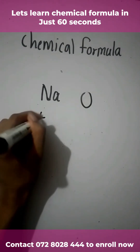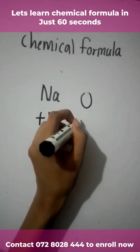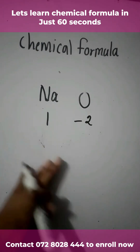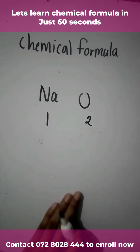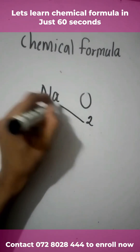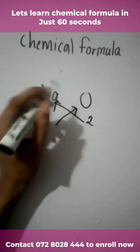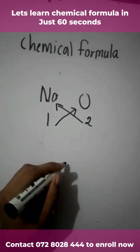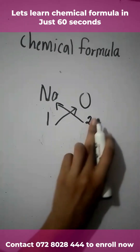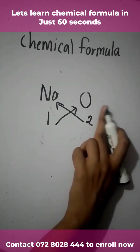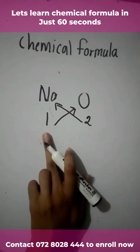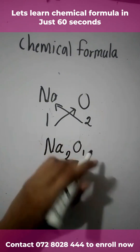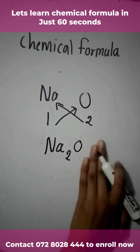The valency of sodium is plus 1 and the valency of oxygen is minus 2. Then you erase the sign in front, and after that you interchange their valencies. That means sodium will get the valency of oxygen and oxygen will get the valency of sodium, giving us Na₂O₁.